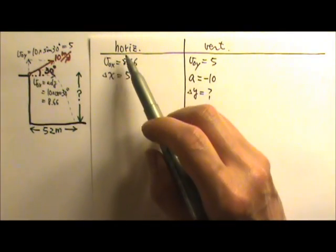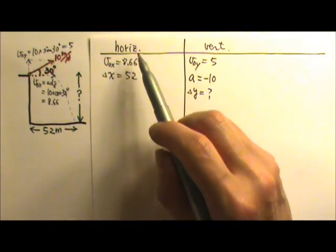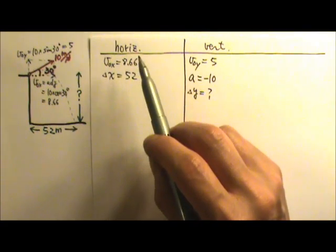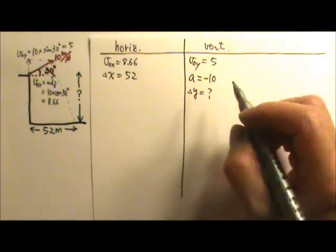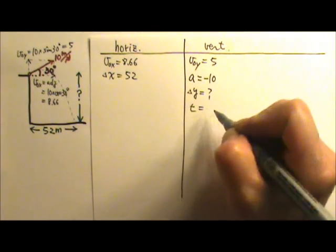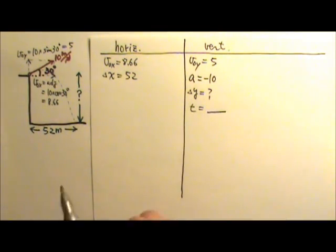And the only thing you can get from the other side is the time, because the two sides have different everything except for the time. So we will be able to find the time from the horizontal side to use for here.